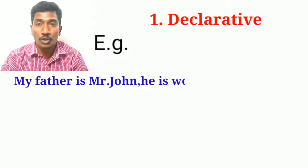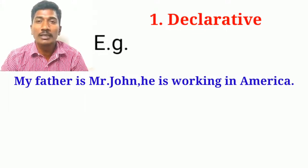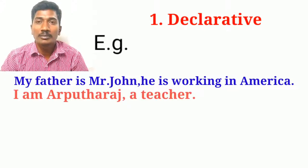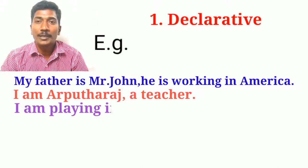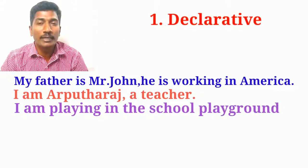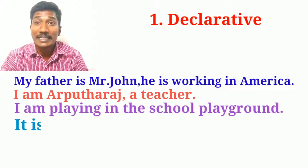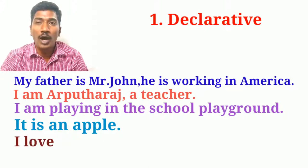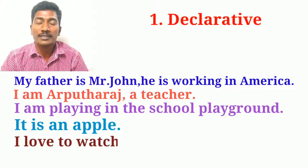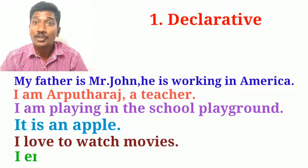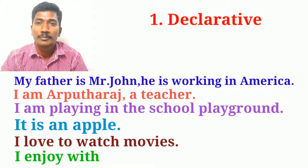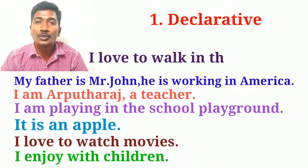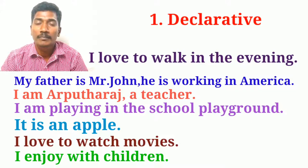My father is Mr. John. He is working in America. I am Arputaraj, a teacher. I am playing in the school playground. It's an apple. I love to watch movies. I enjoy with children. I love to walk in the evening. These are all declarative sentences.